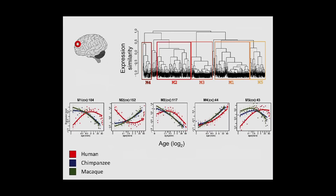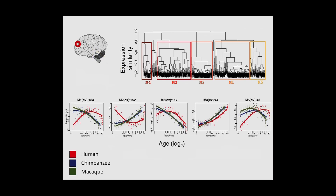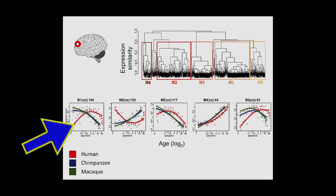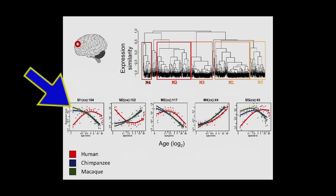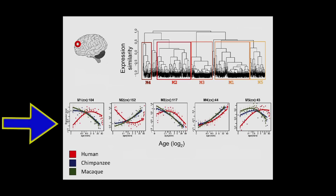Now we can see what kind of genes are affected and what these genes do. We can take all these 700 genes and cluster them into different clusters using similarity of gene expression — a methodological way to deal with all this data. Then what we get are gene groups all sharing similar expression patterns. For instance, this is the human developmental curve — you can see genes follow this kind of trajectory — while chimpanzee and macaque in blue and green show completely different developmental trajectories. So you can see this is a clear human-specific pattern.